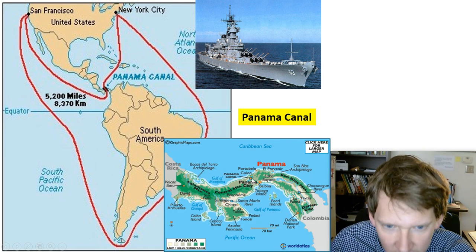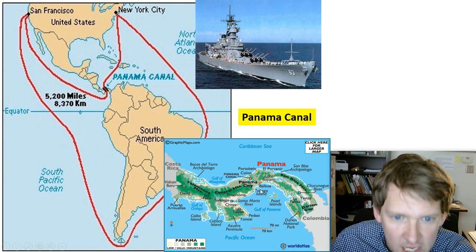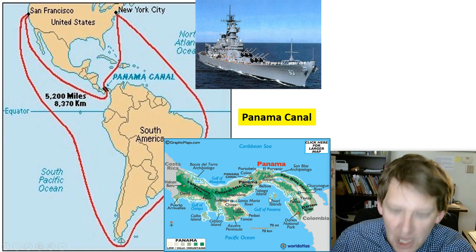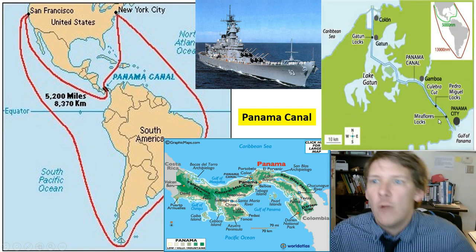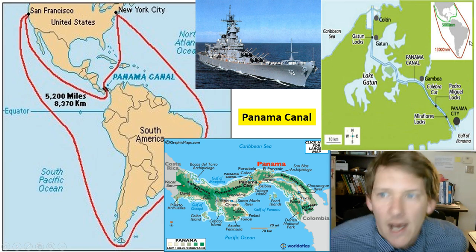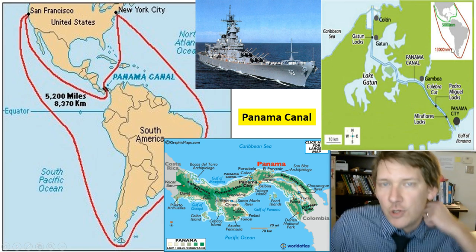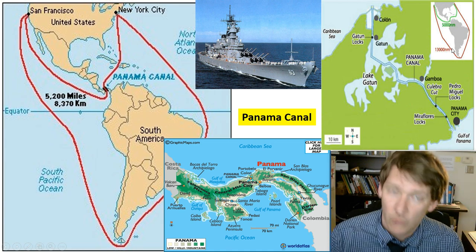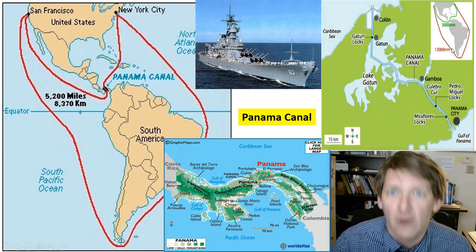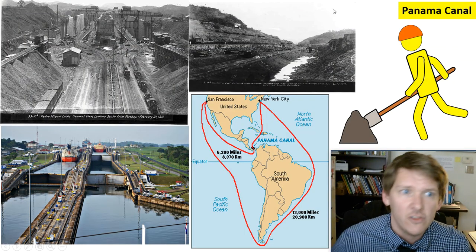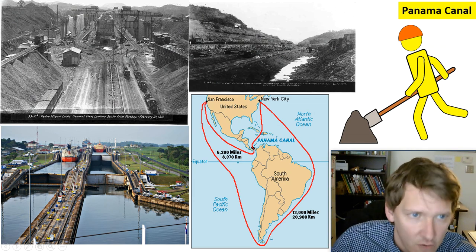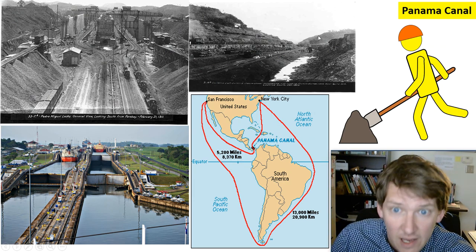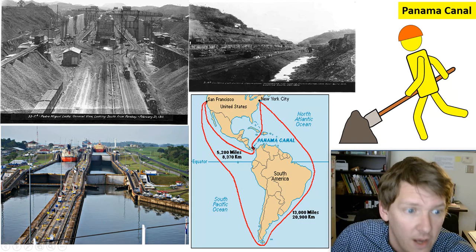We find the narrowest position between North America and South America — what we call today Panama. If we just cut through it, we can create a man-made waterway — 5,000 miles as opposed to 13,000 miles. That's less than half — a really quick trip all of a sudden. You can see pictures here of them carving out, cutting through mountains, and creating this man-made waterway.